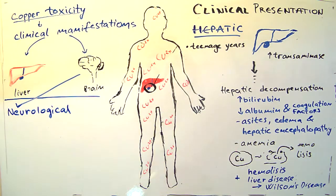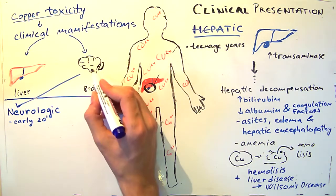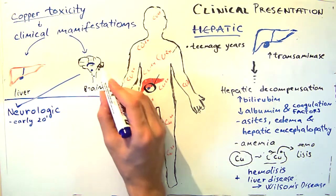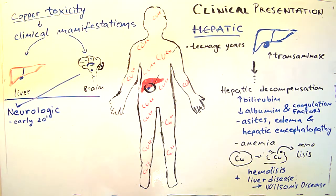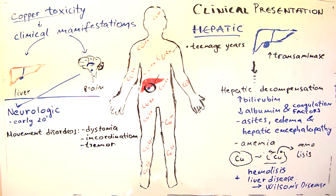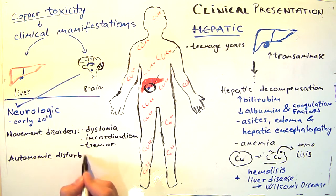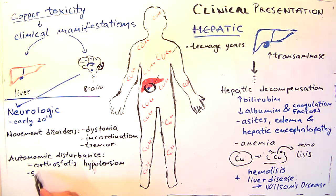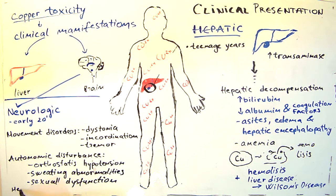Now let's move on to the neurological manifestation of Wilson's disease. The symptoms usually occur in patients in their early twenties. MRI and CT scans can reveal damage in the pons, medulla, thalamus, cerebellum, and subcortical areas. The three main movement disorders include dystonia, incoordination, and tremor. The clinical picture closely resembles that of Parkinson's disease. Autonomic disturbances may include orthostatic hypotension, sweating abnormalities, and sexual dysfunction. Neurological symptoms may also include memory loss, migraine, and seizures.